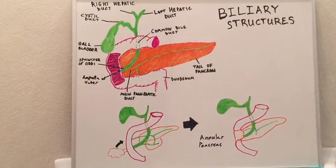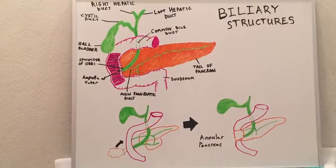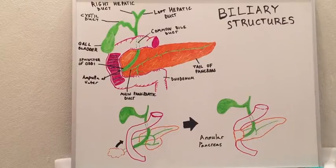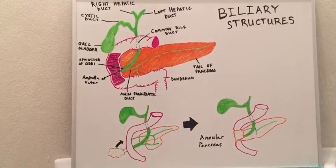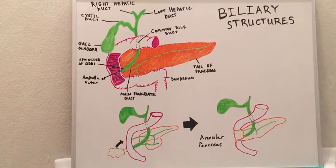Today's lecture is on biliary structures and how we get bile into our intestinal system. Bile is a part of our intestinal system that helps to emulsify fats. So how do we get bile into our system?